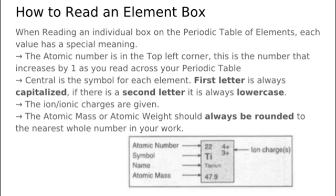The atomic number is in the top left corner, this is the number that increases by 1 as you read across your periodic table. Central is the symbol for each element. Notice that the first letter is always capitalized, if there is a second letter it is always lower case.